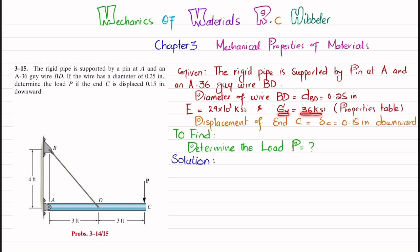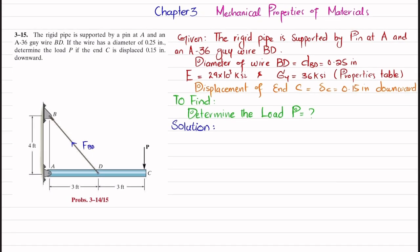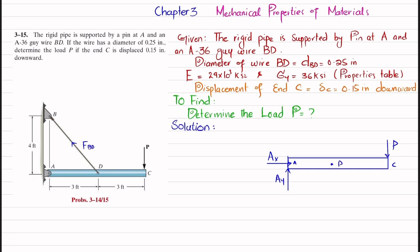From the mechanical properties table, the modulus of elasticity E for A36 steel and its yield stress of 36 ksi are used. For the solution, the wire applies a force FBD on the rigid pipe BAC. Drawing the free body diagram: at point A, removing the pin gives horizontal and vertical reaction forces; at C there is point load P; at B, the effect of wire BD is shown as force FBD.